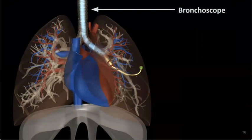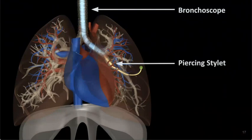including a conventional bronchoscope, a piercing stylet to exit airways into the lung tissue, and a steerable needle.